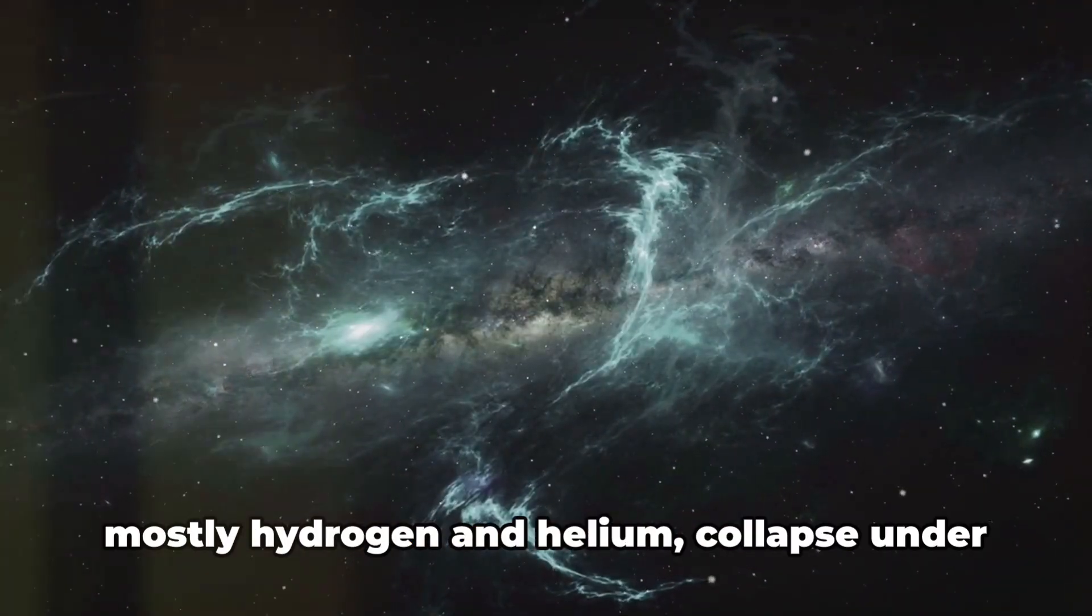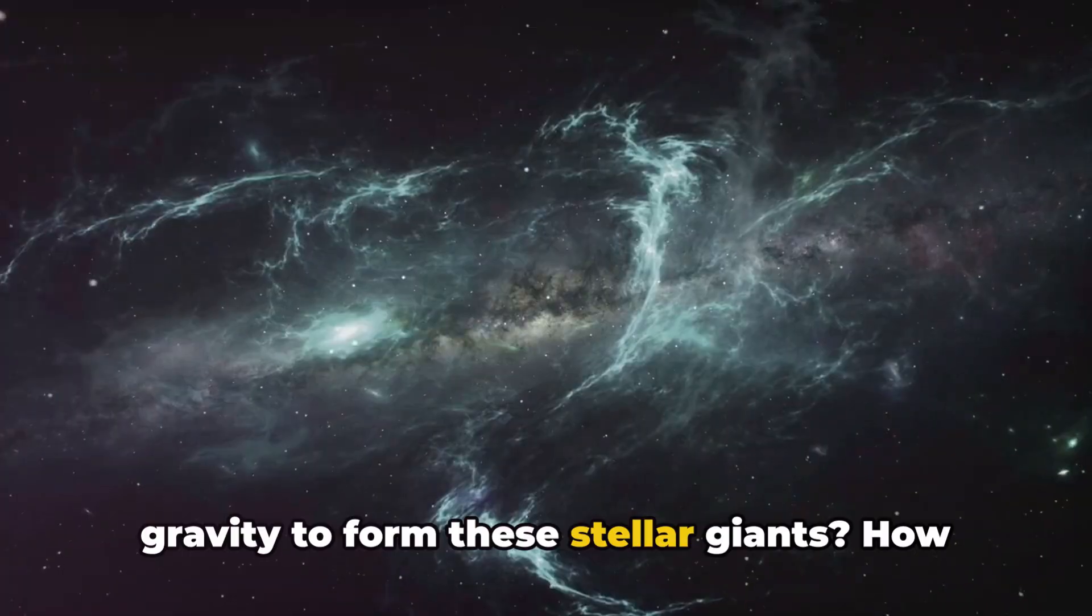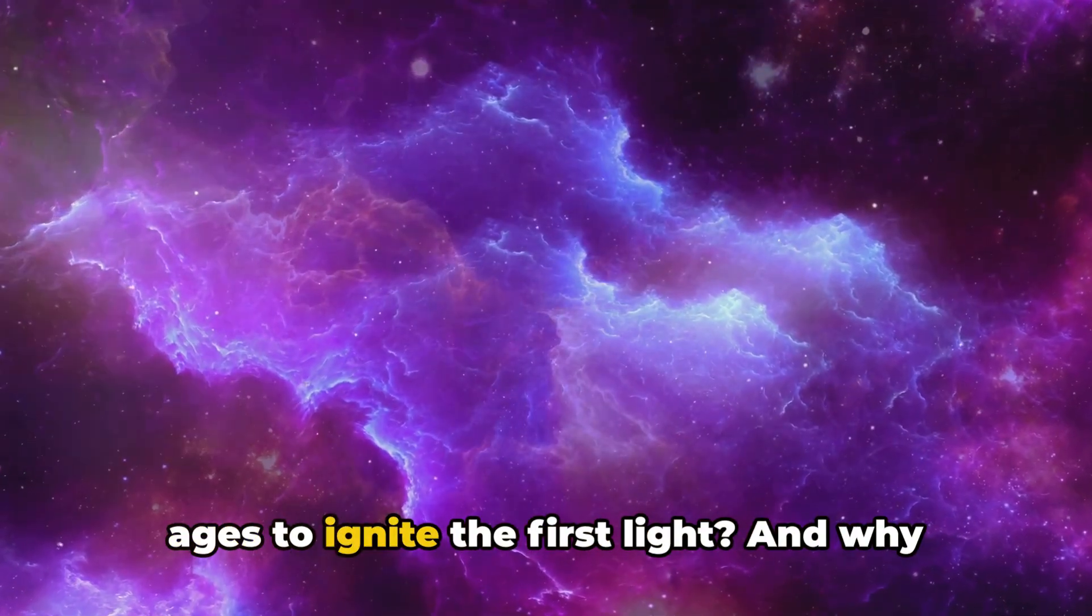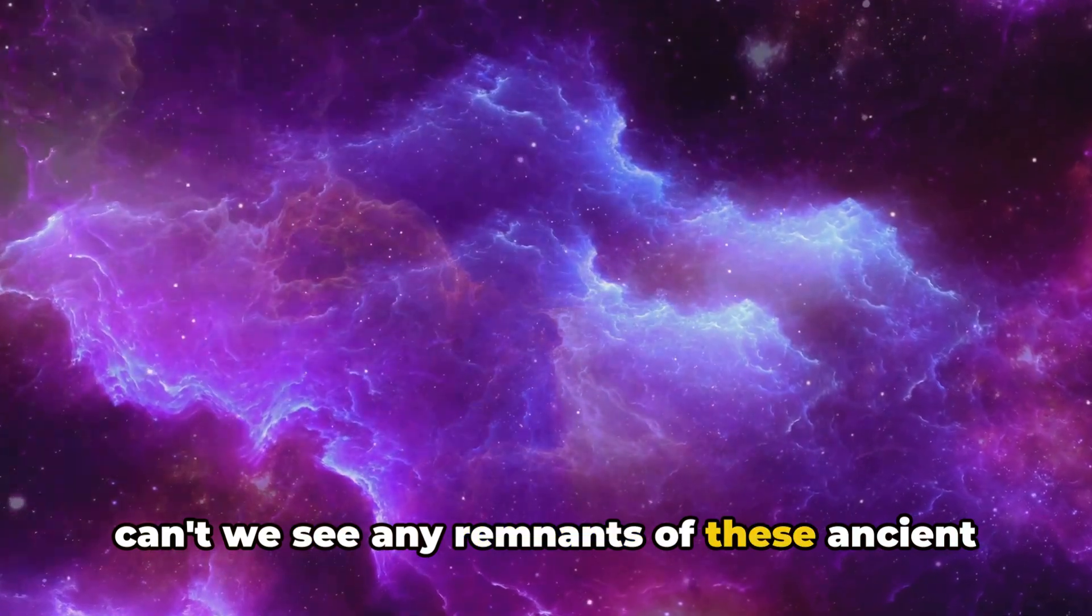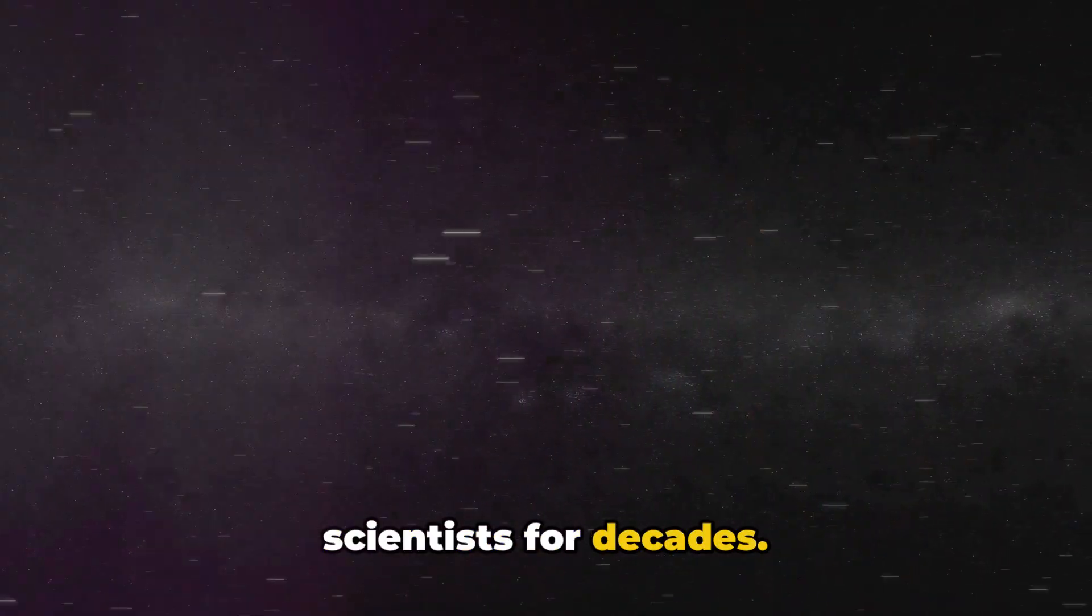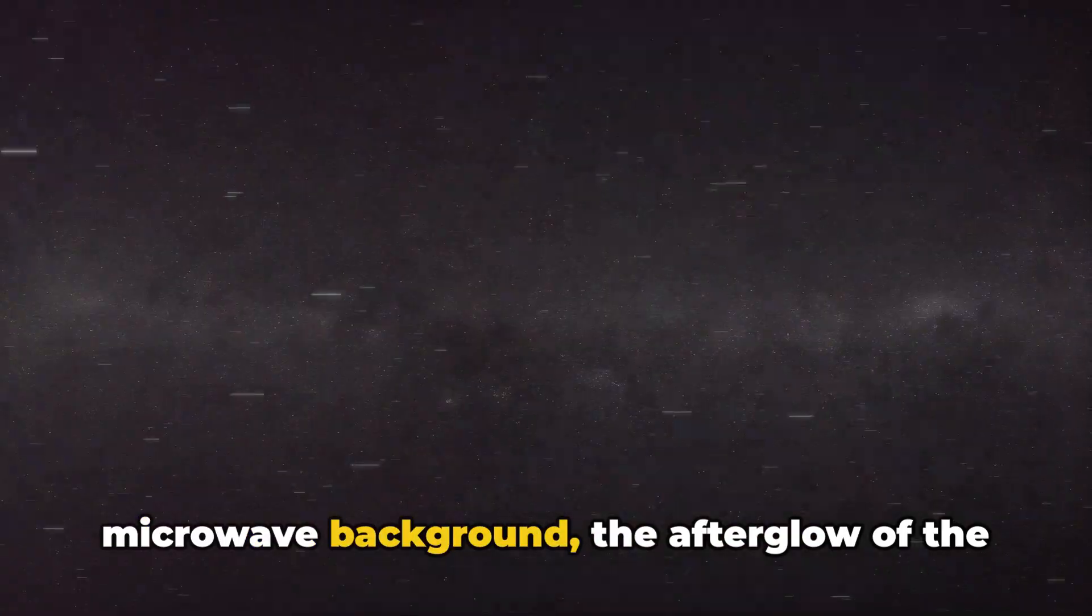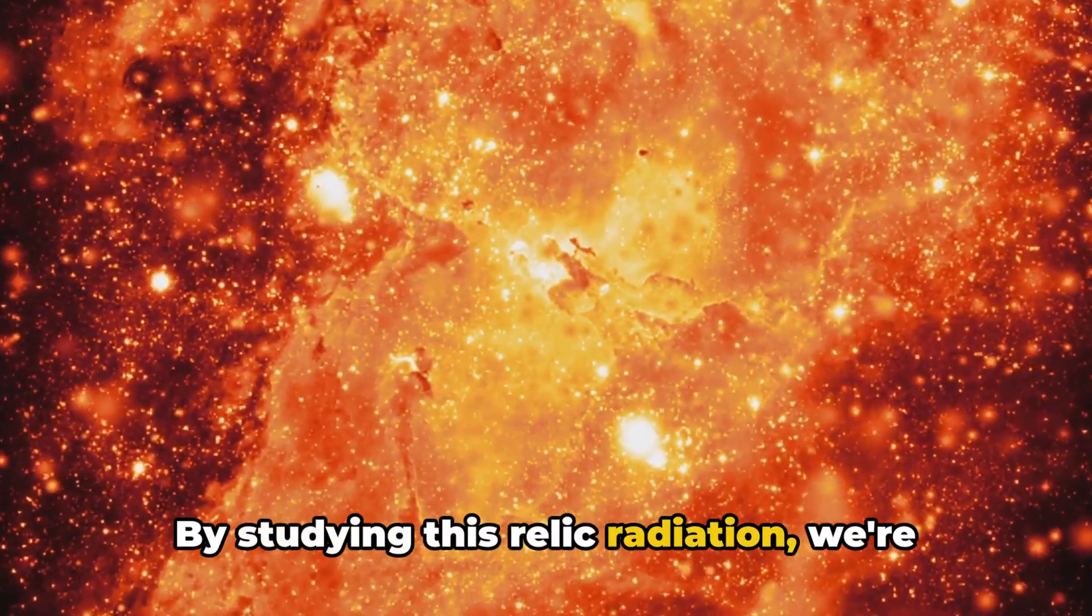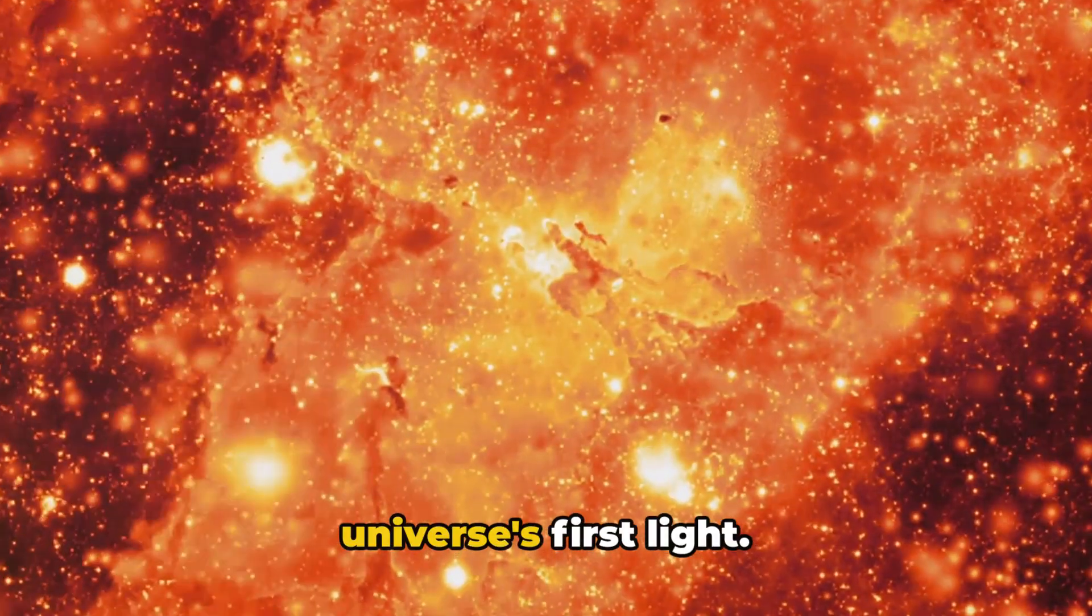How did matter in the early universe, mostly hydrogen and helium, collapse under gravity to form these stellar giants? How did they break through the cosmic dark ages to ignite the first light? And why can't we see any remnants of these ancient stars today? These questions have puzzled scientists for decades, but the answers lie hidden in the cosmic microwave background, the afterglow of the big bang. By studying this relic radiation, we're slowly piecing together the story of our universe's first light.